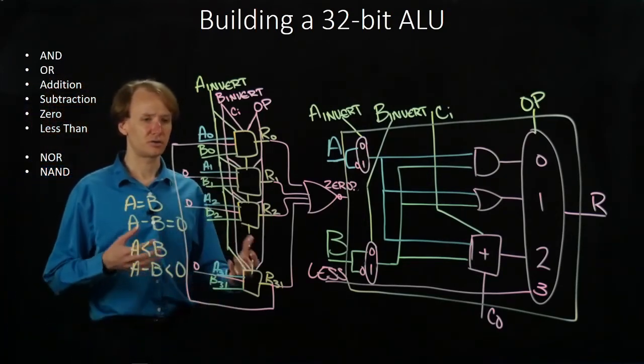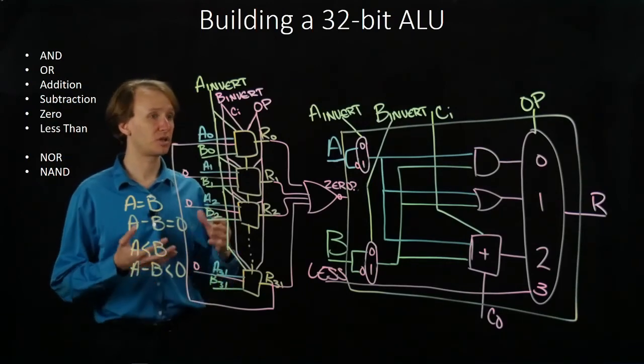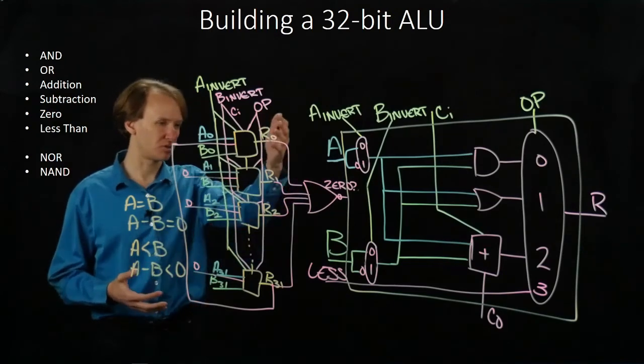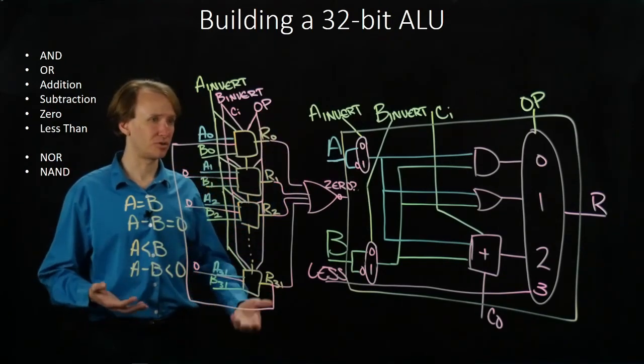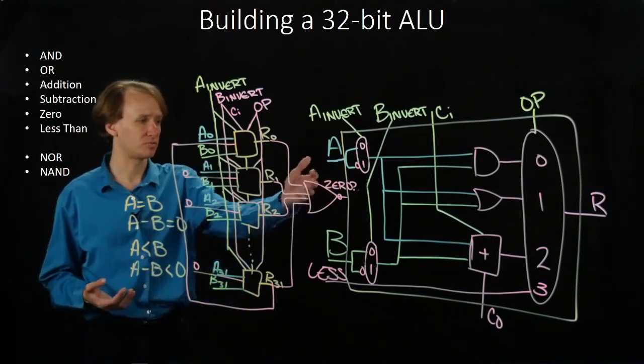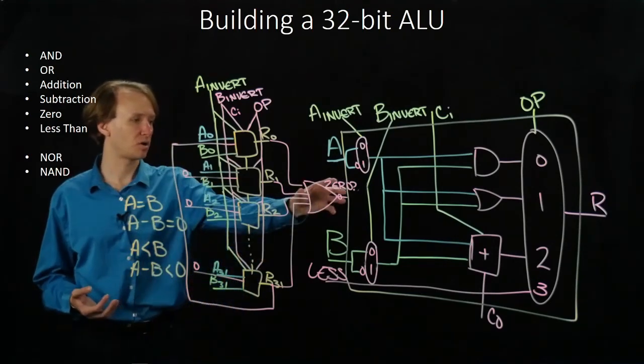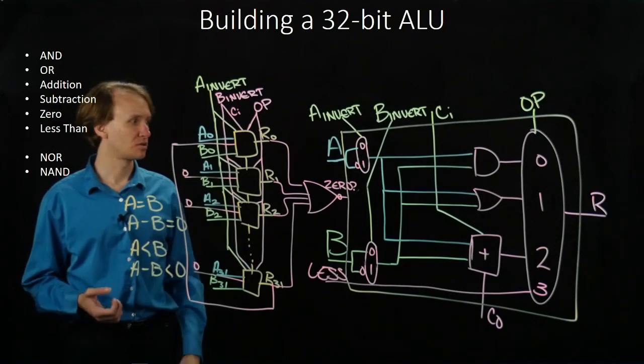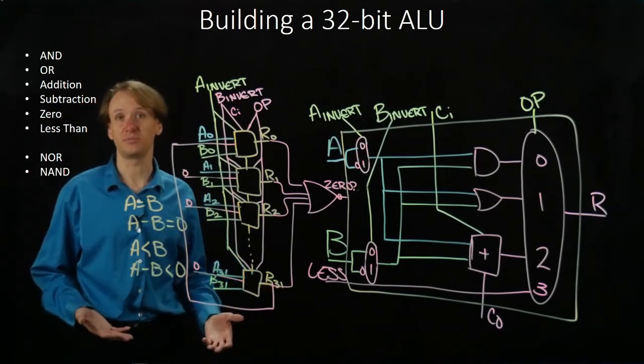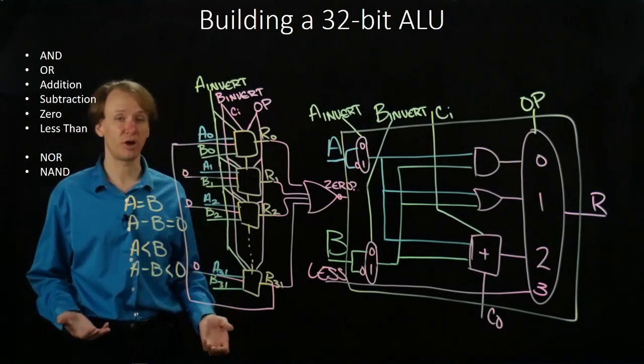So there are two comparison operations that we can do really easily just with this existing hardware. For zero, we just took the results of all of our result bits from doing subtraction and looked to see if all of those bits were zero. So we have a NOR gate there. To do less than, we do subtraction and we only look at the most significant bit. That tells us whether our results were positive or negative.